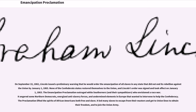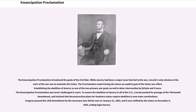The Emancipation Proclamation outraged white Southerners and their sympathizers, who envisioned a race war. It angered some Northern Democrats, energized anti-slavery forces, and undermined elements in Europe that wanted to intervene to help the Confederacy. The proclamation lifted the spirits of African Americans both free and slave. It led many slaves to escape from their masters and get to Union lines to obtain freedom, and to join the Union Army.